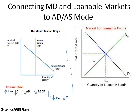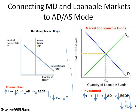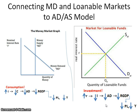Now turning to the market for loanable funds: when the real interest rate goes up, which component of AD is affected — C, I, G, or XN? The answer is investment. An increase in the real interest rate decreases investment, which decreases AD and real GDP, causing both the price level and output to fall.